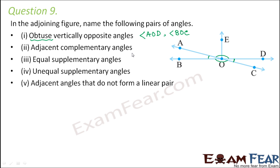Adjacent complementary angles means two angles located one after another whose sum equals 90 degrees. Here, this 90-degree angle is formed by two smaller angles — this angle and this angle. These two angles are adjacent: they have a common vertex, a common side, and no common interior points. So angle AOB and angle AOE are adjacent complementary angles.